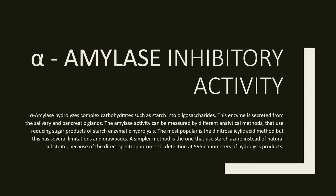Alpha-amylase hydrolyzes complex carbohydrates such as starch into oligosaccharides. This enzyme is secreted from the salivary and pancreatic glands. Amylase activity can be measured by different analytical methods using reducing sugar products of starch enzymatic hydrolysis. The most popular is the dinitrosalicylic acid method, but this has several limitations and drawbacks. A simpler method uses starch azure instead of natural substrate, because of direct spectrophotometric detection at 595 nanometers of hydrolysis products.